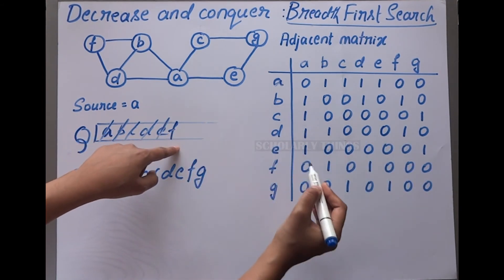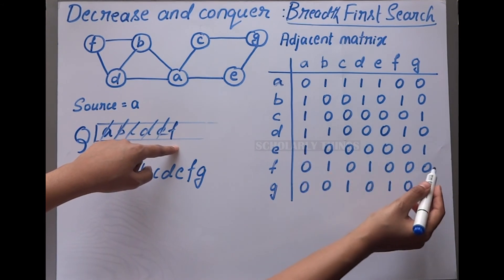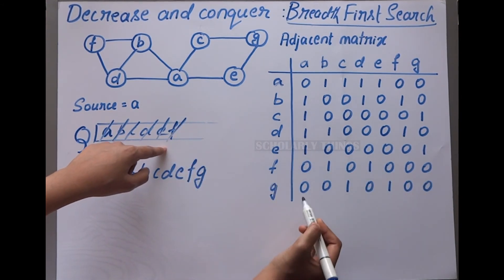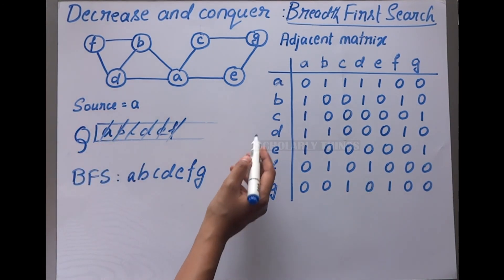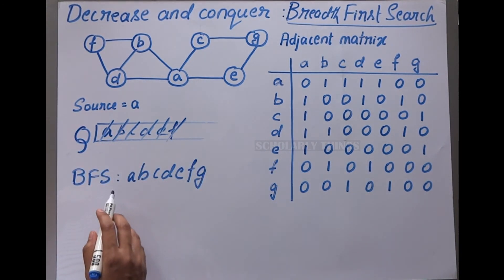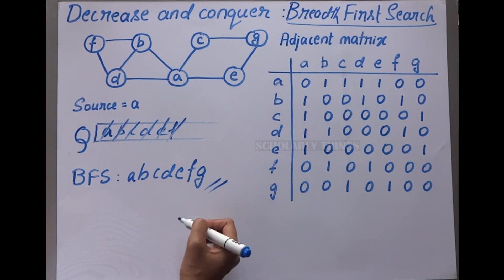Pop e - a is done, g is done. Pop f - b is done. We have visited all the nodes. This is the BFS order: a, b, c, d, e, f, g.